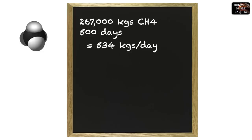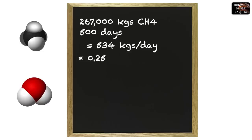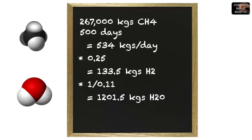With four hydrogen atoms per carbon atom making up 25 percent of the methane mass, and needing to create 534 kilograms of methane daily, hydrogen only accounts for two of the 18 atomic units in the water molecule while oxygen accounts for the other 16. So a quarter of the methane harvest quota — 534 kilograms — is 133.5 kilograms of hydrogen. Applying the 8-to-1 ratio from the water molecule, they would have to harvest 1201.5 kilograms of water per day.